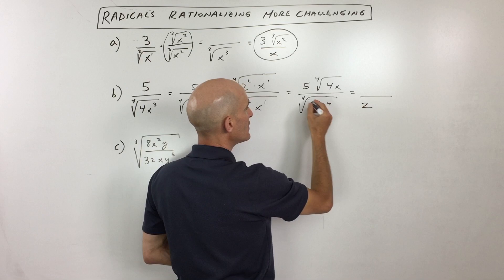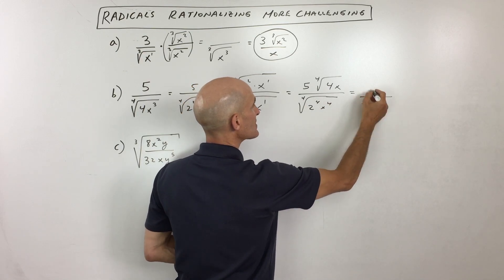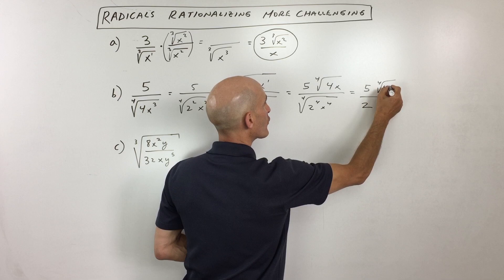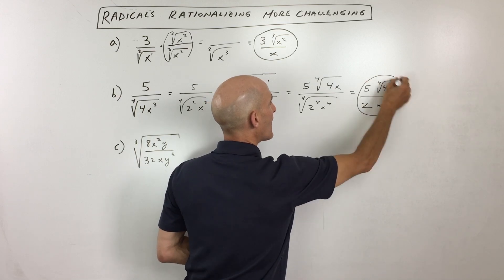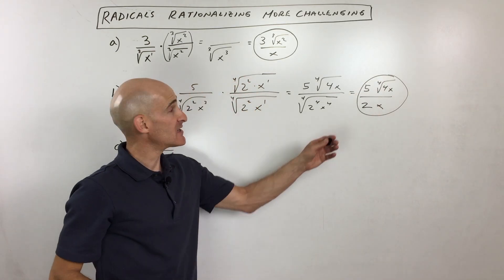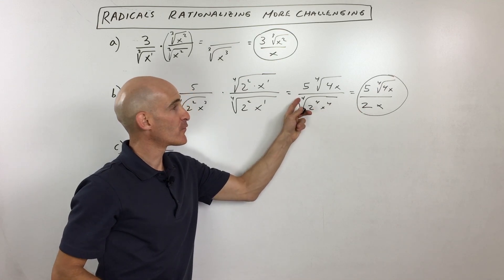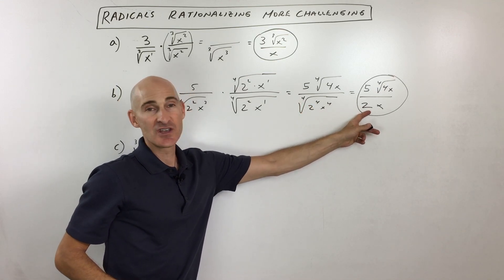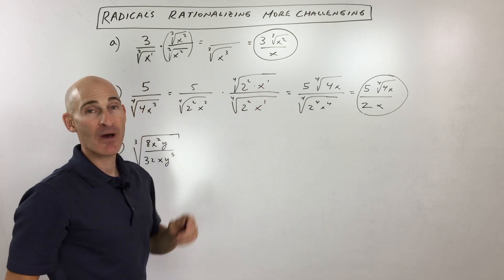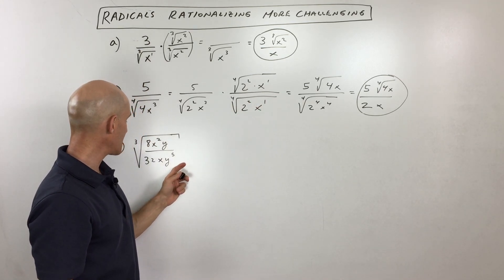They're inverses, so you get 2. Same thing with the x is you get x, and the numerator we have 5 times the fourth root of 4x, and you've got it. So the key is to make the denominator a perfect fourth root so that you can get rid of that radical in the denominator, but you want to make sure you do the same thing top and bottom, so it's like multiplying by 1.